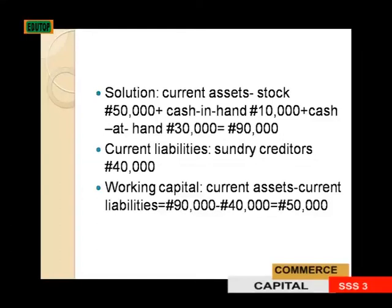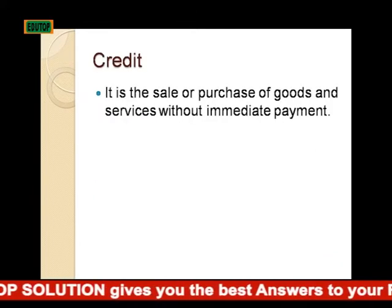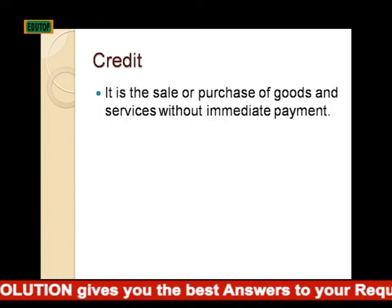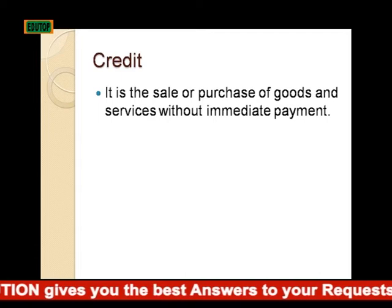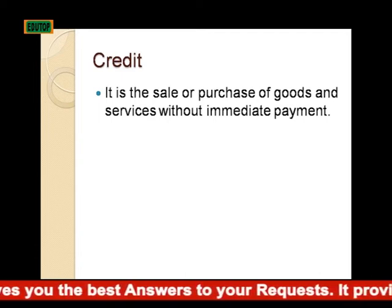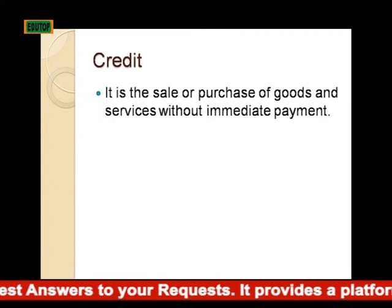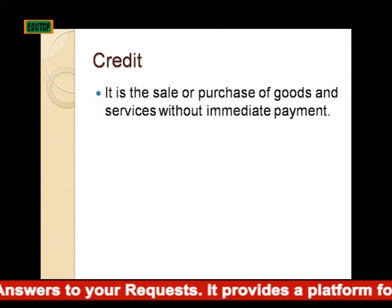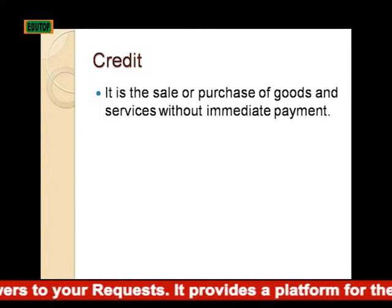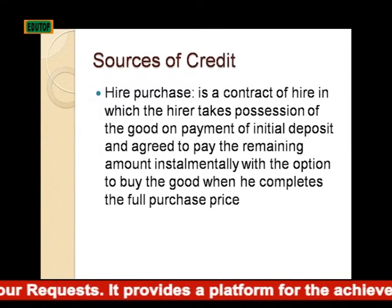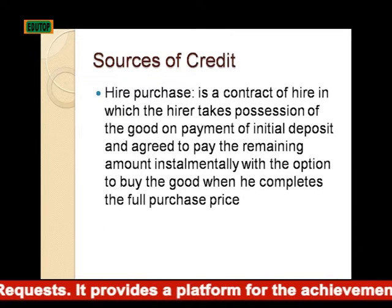The working capital is 50,000 — that is current assets minus current liabilities of 40,000. Now, what do you understand by credit? Credit is the sale or purchase of goods and services without immediate payment.